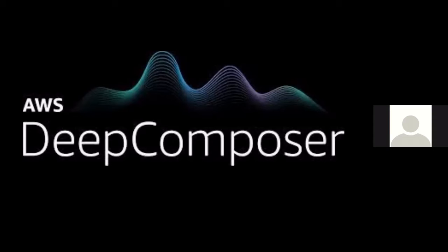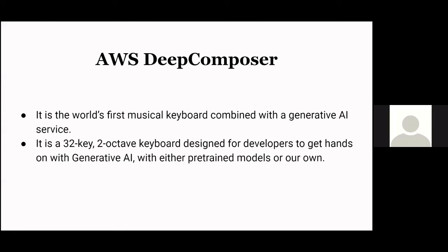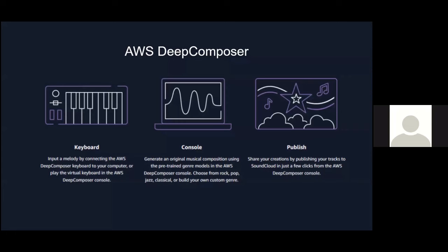Our example of SaaS is AWS Deep Composer. It is the world's first musical keyboard combined with generative AI services, featuring a 32-key, two-octave keyboard designed for developers. It consists of a keyboard, console, and an AWS step.